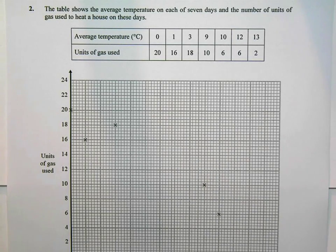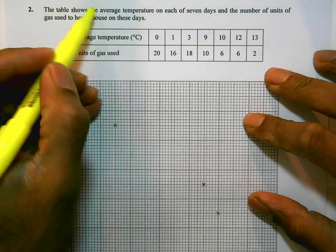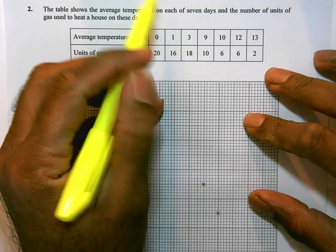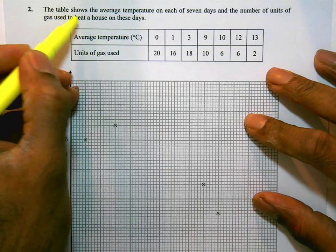This is question number 2 on the June 2014 calculator paper. Let's have a look at the question. It says the table shows the average temperature on each of 7 days and the number of units of gas used to heat a house on these days.